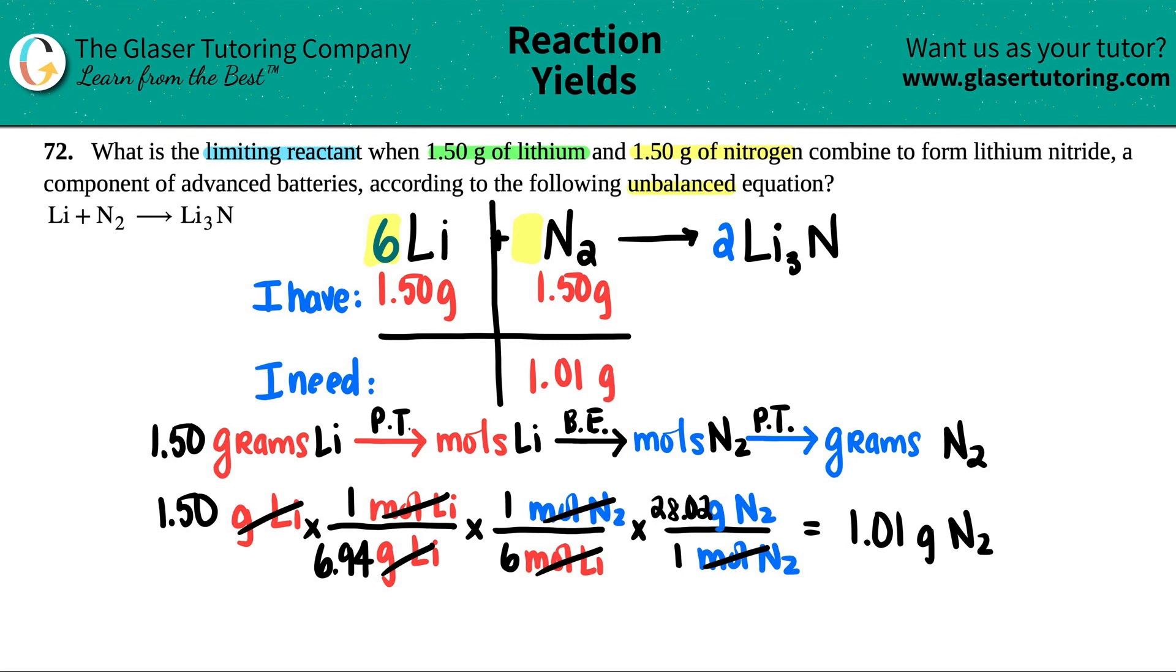Now that's all the math that you have to do. Now we just have to talk about what's going on here. And this will give you the answer of whether it's a limiting reactant or not. Now you say to yourself, okay, I have 1.5 grams of N2, but I only need 1.01 grams of N2. Is there going to be any leftover? So maybe that's the question that you have to ask yourself.